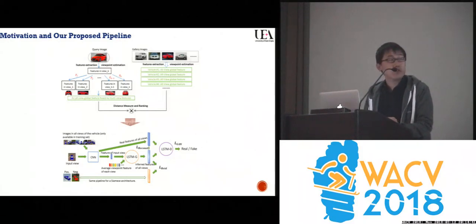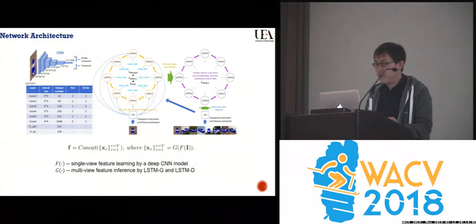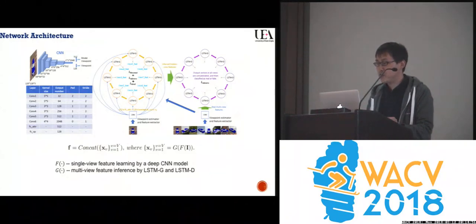We adopt the final representation for distance-metric learning. Here's an overview of our design approach. The left part is a CNN module for learning input vehicle model and viewpoint features. The LSTM-G loop aims to learn transformations from the input view feature to the hidden view features.